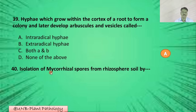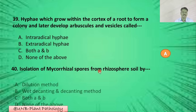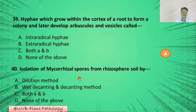Question number forty: Isolation of mycorrhizal spores from rhizosphere soil — A: by dilution plate method; B: by wet sieving and decanting method; C: by both A and B; D: none of the above. The correct answer is B: wet sieving and decanting method.